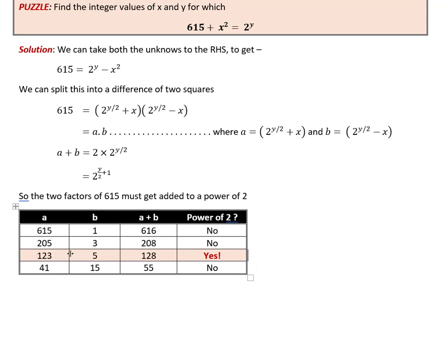So we'll start taking these values now. So a is equal to 123, b is equal to 5, and using those we can calculate y.